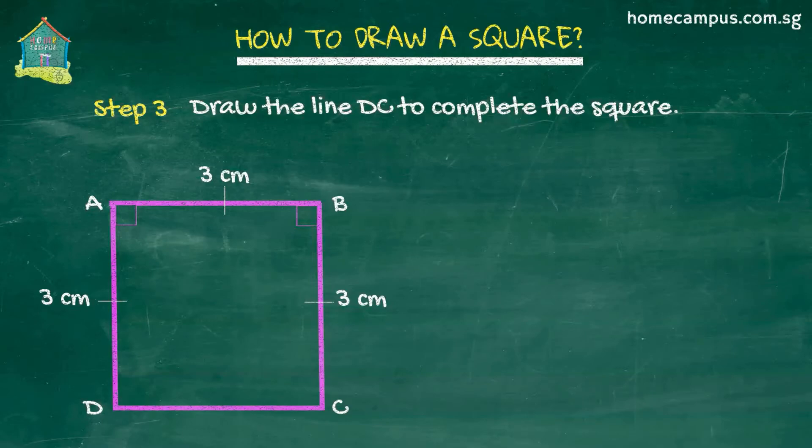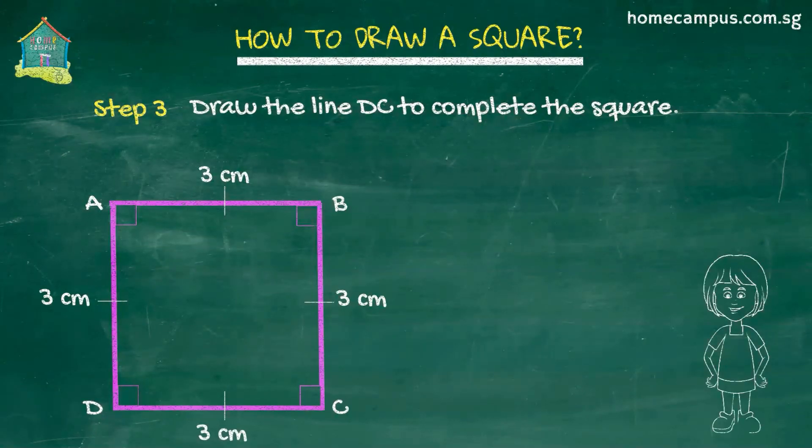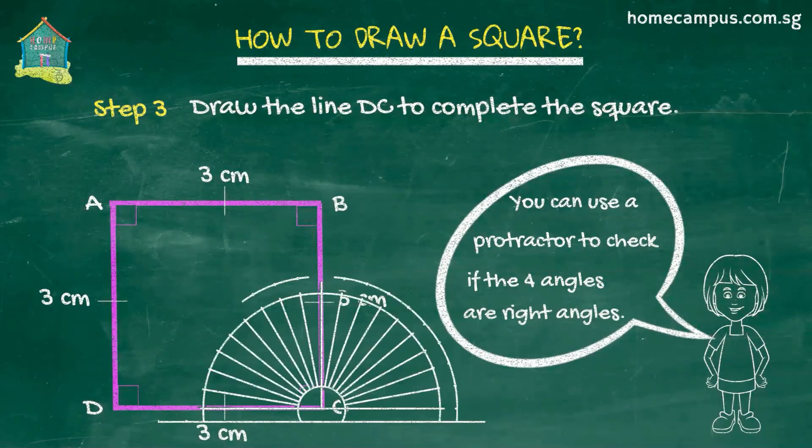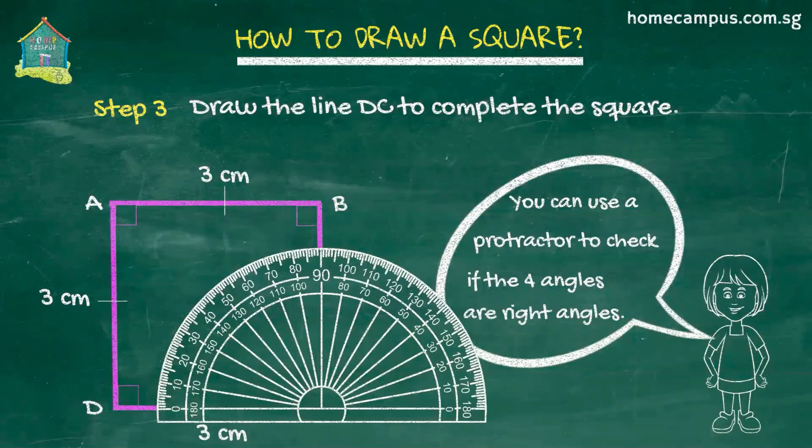To check that the four angles of the square are right angles, we use a protractor. We place the center of the protractor at each corner and measure the angle that the two lines form. The angle should be 90 degrees for each corner.